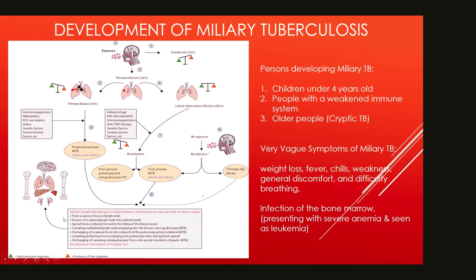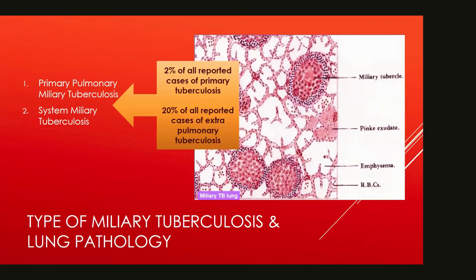The pathways of spread include: erosion of the caseous lymph node into a blood vessel; spread from a tubercle formed in the intima of the blood vessel; caseating mediastinal lymph nodes emptying into the thoracic duct; pulmonary miliary TB from discharging of a caseous focus into a branch of the pulmonary artery; caseating pulmonary focus emptying into the pulmonary veins; and systemic spread.